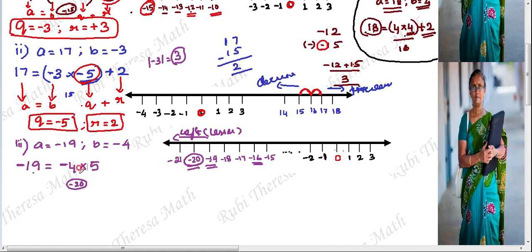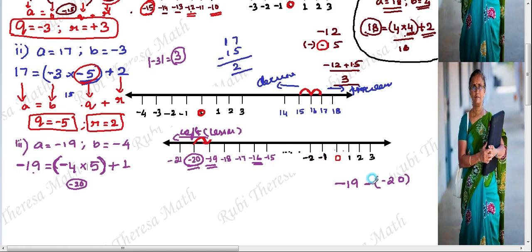So BQ is minus 20, which is on the left of minus 19. Using the frog jump method on the number line: from minus 20 to minus 19 is one jump to the right. The remainder is minus 19 minus of minus 20, which becomes minus 19 plus 20, giving remainder equals plus 1.